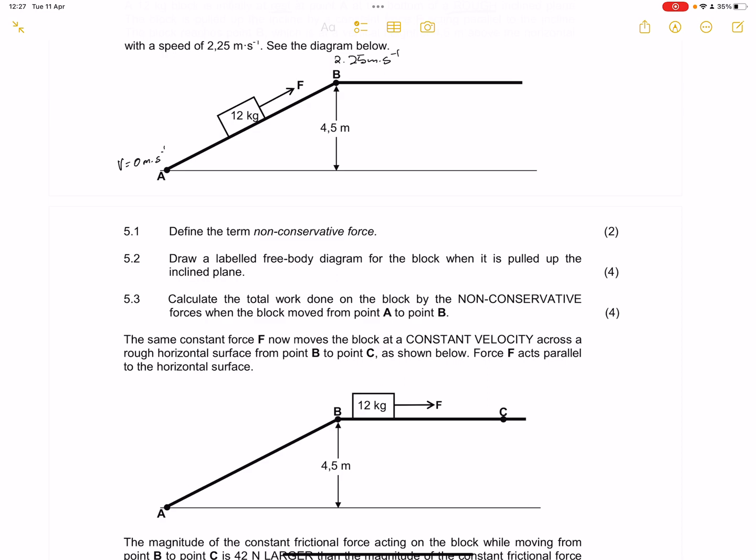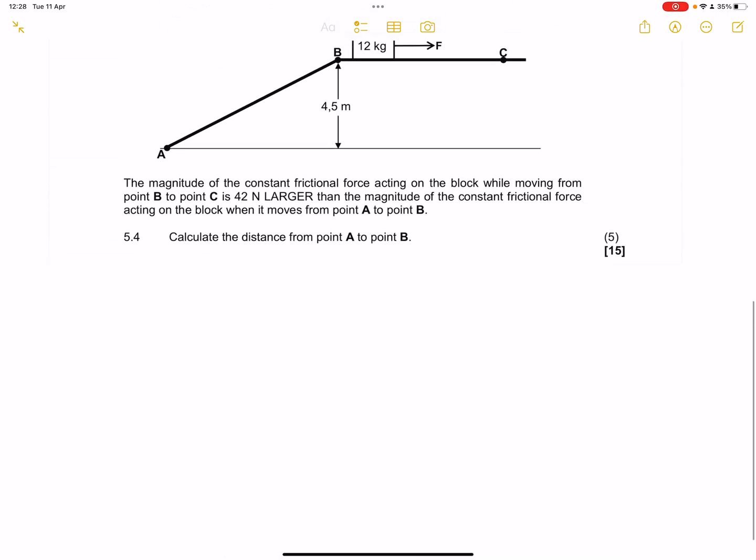The second question, they say draw a labelled free body diagram for the block when it is pulled up the inclined plane. Now, please, ladies and gents, get into the habit of checking what the mark allocation is. The mark allocation always gives you a good indication of how many forces there should be. So we're going to have the applied force there. And please note, once they say it's a labelled free body diagram, it means you ought to label the forces in full.